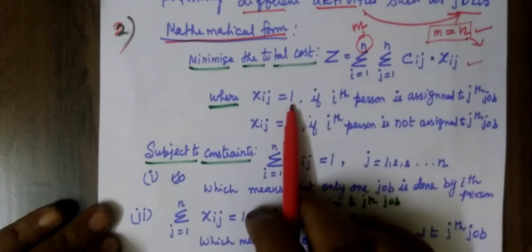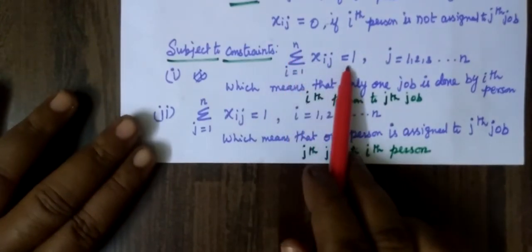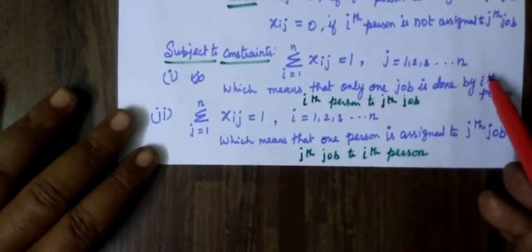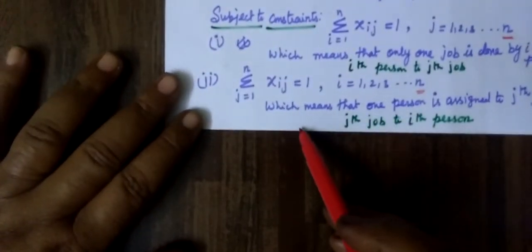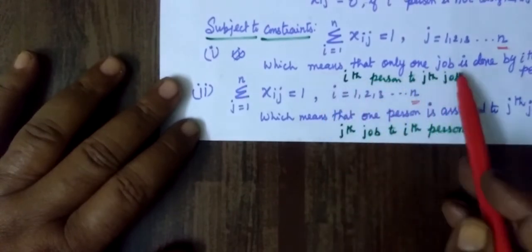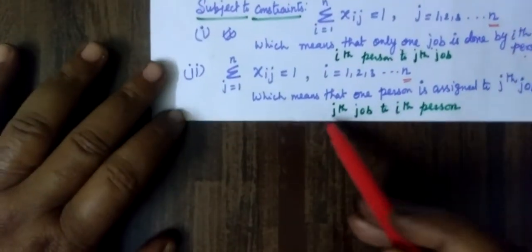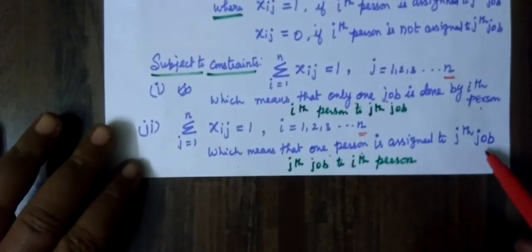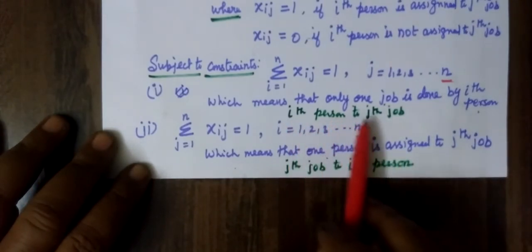Here x_ij is treated as 1 if assigned, and 0 if not assigned. This is subject to the constraint: sigma i=1 to n of x_ij equals 1. This is a square cost matrix where i equals n and j equals n. So here, 1 job is assigned to 1 person, and 1 person is assigned to 1 job.